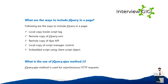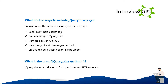What are the ways to include jQuery in a page? The ways to include jQuery in a page are: local copy inside a script tag, remote copy from jQuery.com, remote copy from Ajax API, local copy via Script Manager control, and embedded script using the ClientScript object.